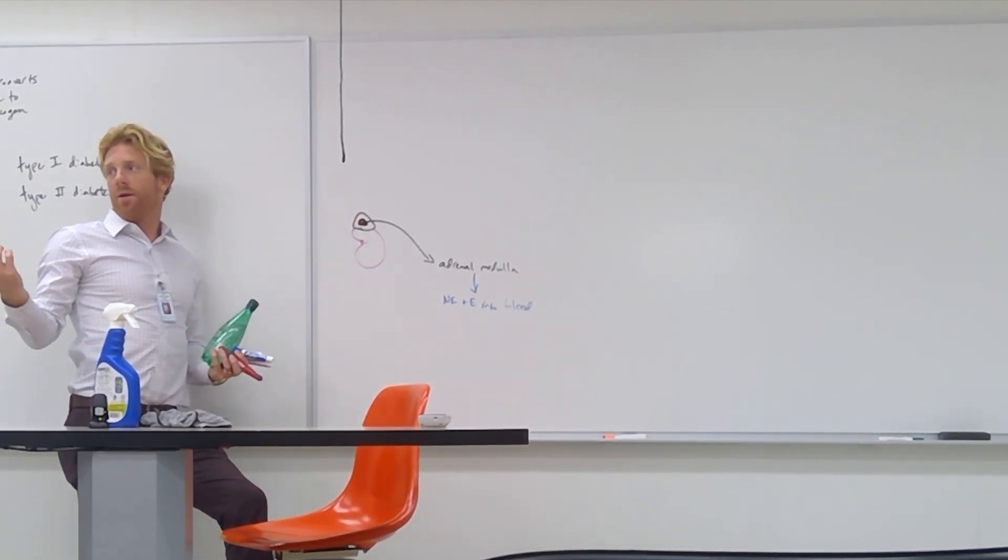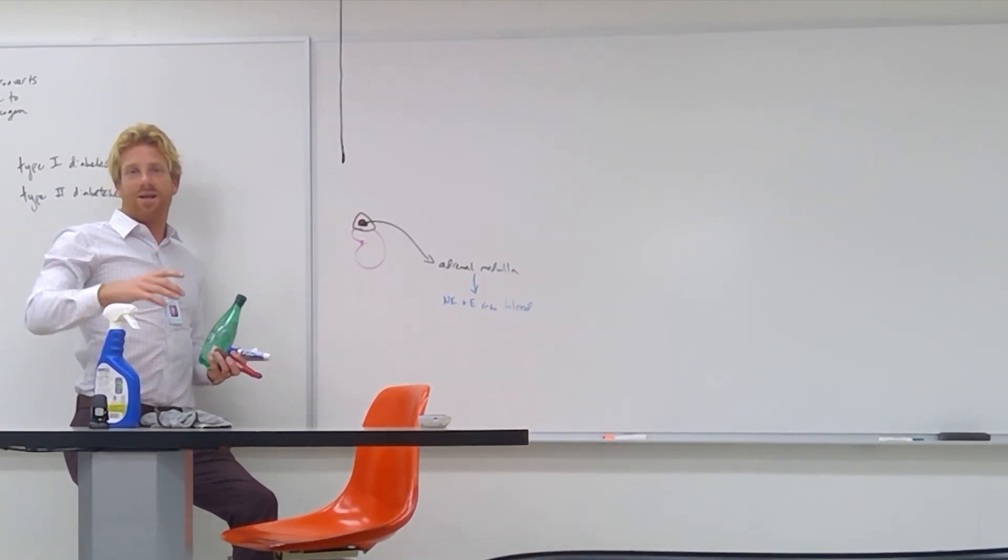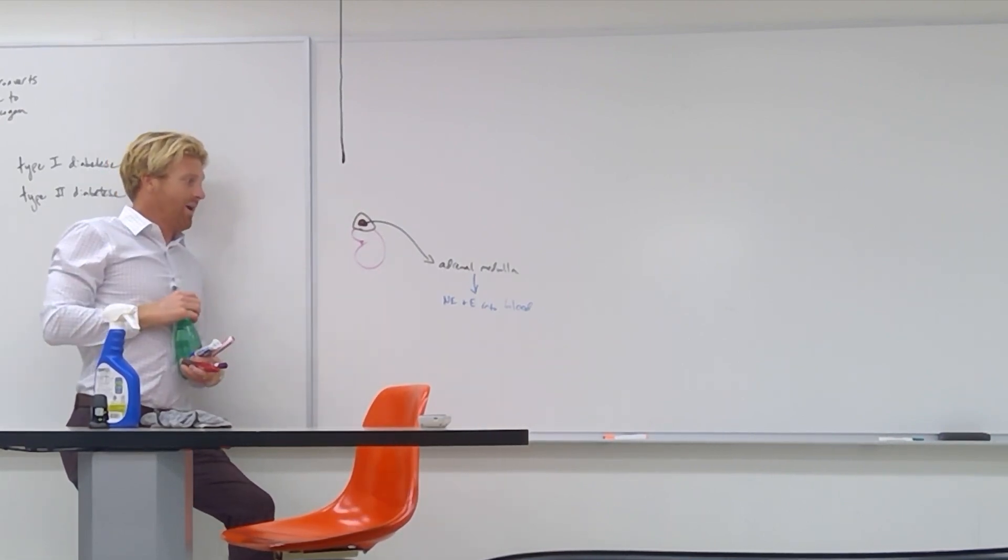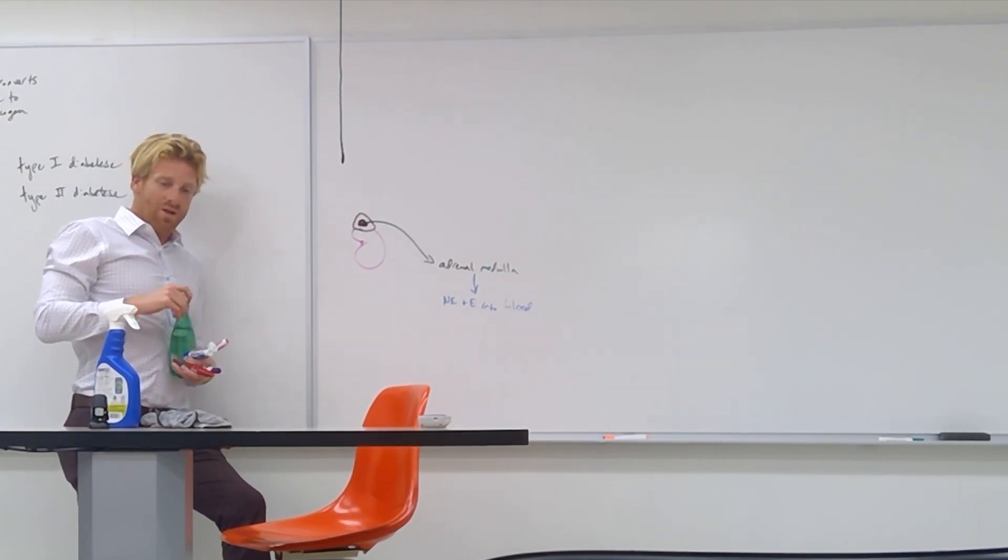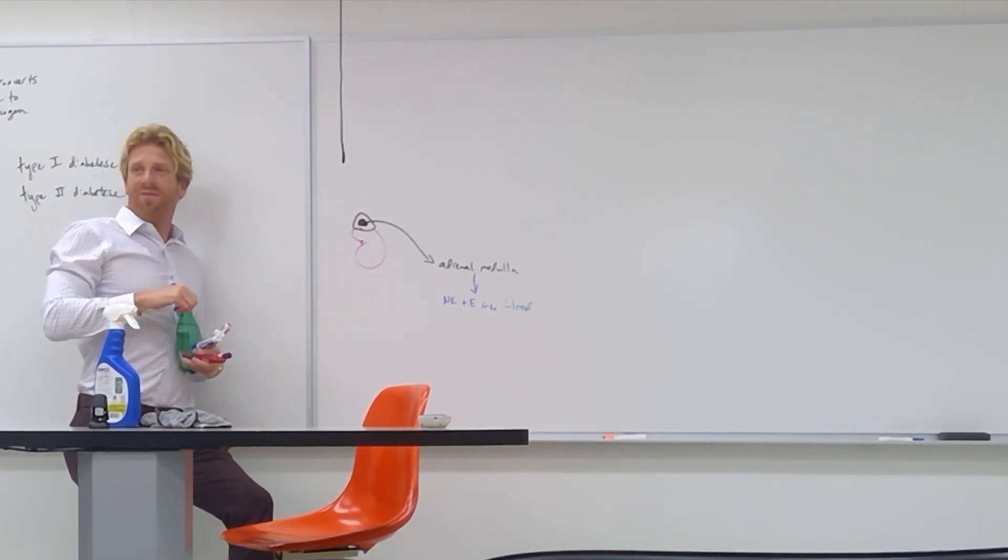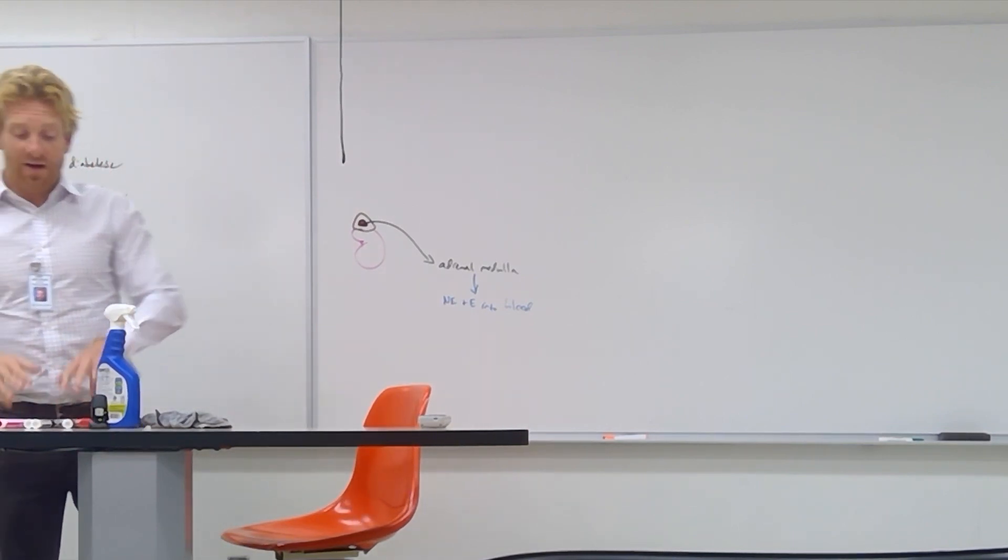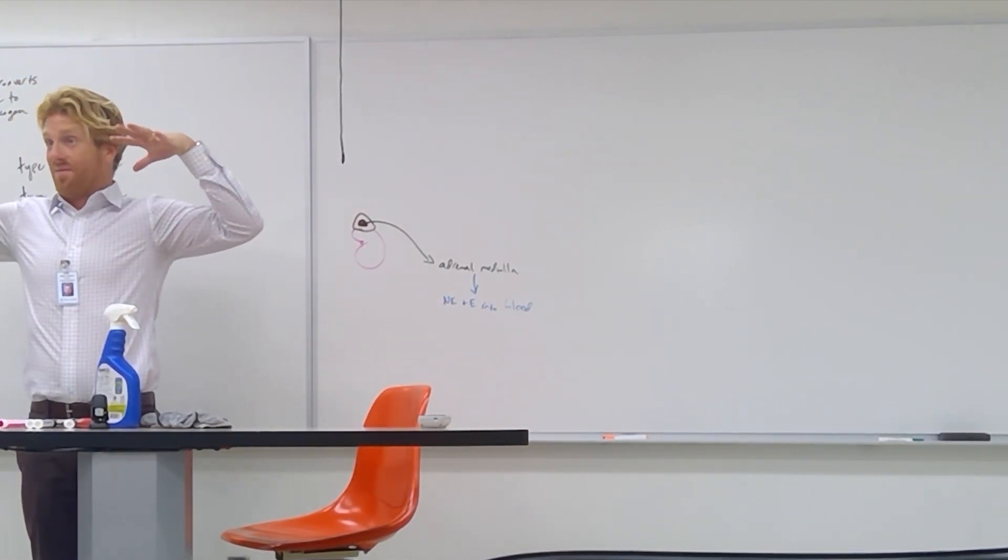Norepinephrine and epinephrine, it's just a synonym for adrenaline. So when you think of adrenaline, you're really talking about norepinephrine and epinephrine. That gets released into the blood. What effect does that have on the body? It ramps up. It amplifies all the effects of that sympathetic nervous system.